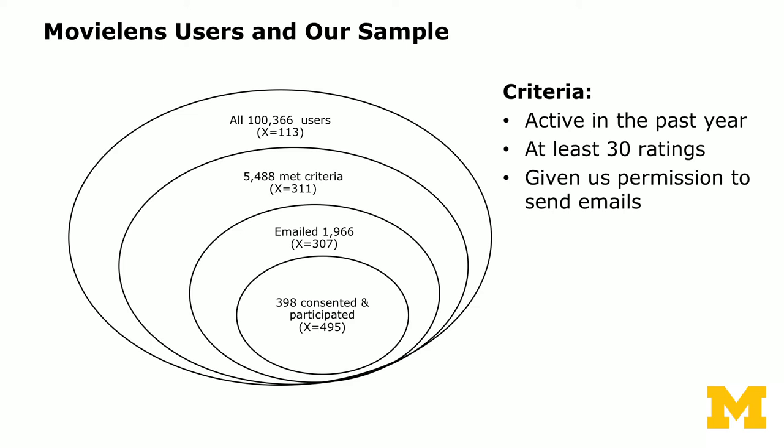We had to first decide on our sample. MovieLens had 100,000 users; the average number of movie ratings among them is 113. We imposed a number of criteria: they had to be active in the past year, have at least 30 ratings so recommendations would be somewhat accurate, and have given permission to be emailed. That reduced the eligible users for the experiment to 5,488. The average number of ratings for this group is 311, significantly different from the universe of users. Among these, we emailed 1,900 and about 400 consented to participate.